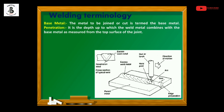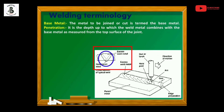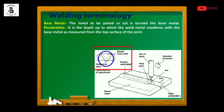The second important term is penetration. As you can see in the figure, the depth up to which the weld metal combines with the base metal is known as penetration. The molten form of the base metal and weld metal fills the gap between the two parent metals, and that depth or height is indicated as the penetration of the weld. This is achieved by a number of passes of the weld.